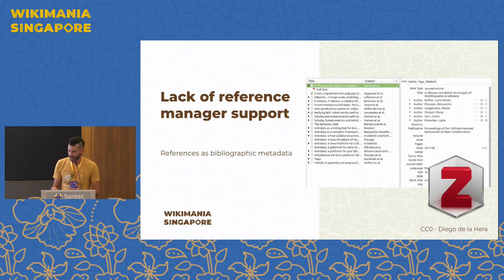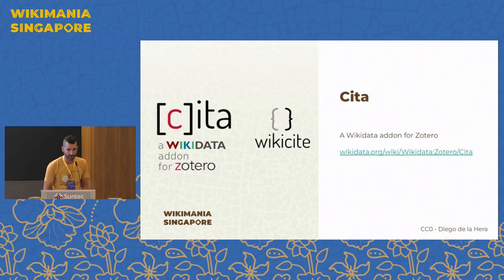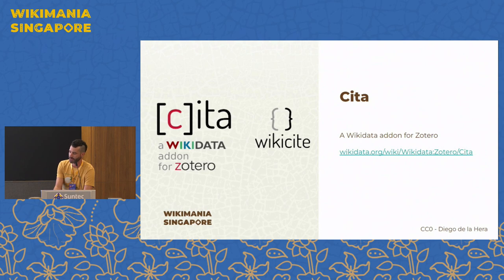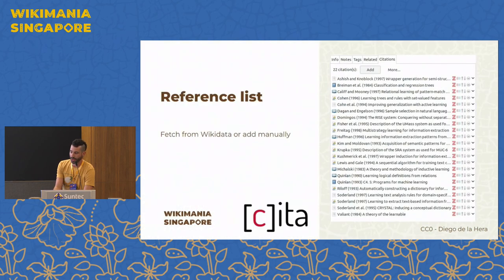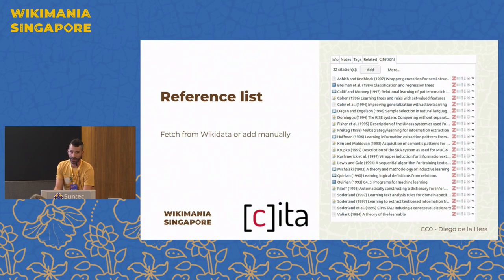So the idea of the project, which was financed by a Wikicite grant the year that the conference could not be held because of the pandemic — this was in 2020 — is to bring support to Zotero for citation graphs, either getting this information from Wikidata or adding that information manually.